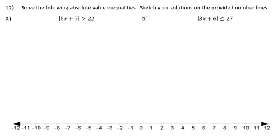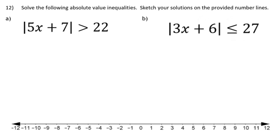Question 12 has two parts, a and b, done on separate slides. Part a is an absolute value inequality. The absolute value of something is greater than 24. When the absolute value is greater than a number, I know there will be two parts joined by 'or.'